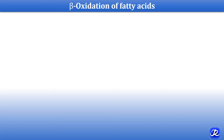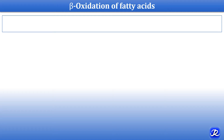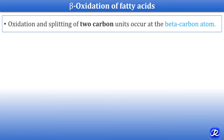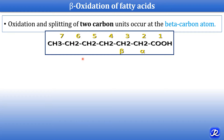Beta oxidation of fatty acid is the major pathway of catabolism of fatty acids. Why is it called beta oxidation of fatty acid? Because the oxidation and splitting of two carbon units occur at the beta carbon atom.